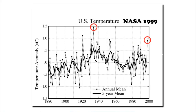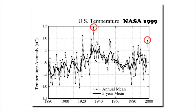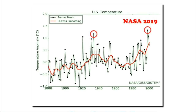In part one, I showed how government temperature graphs have changed over time. Twenty years ago, NASA showed that the United States had cooled from the 1930s through the end of the 20th century, but now they show warming during that same time period. This is essentially the same data set they were using in 1999, but NOAA and NASA are altering the temperature data — by altering the data, they turn cooling into warming.